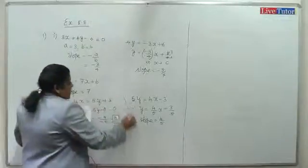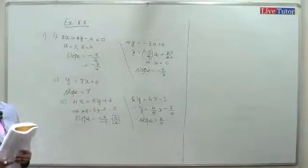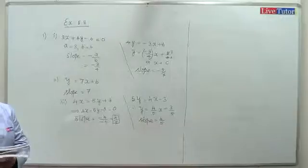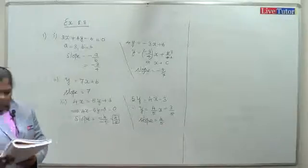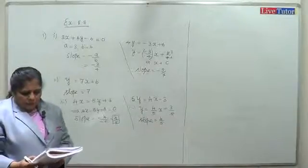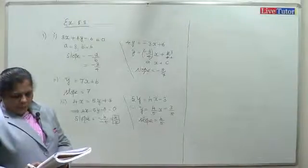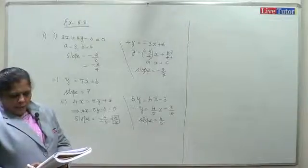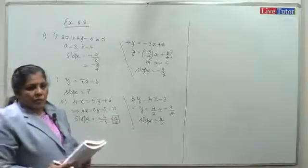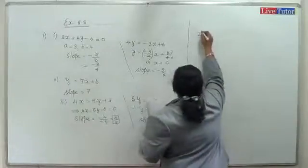Question 2: Show that the straight lines x plus 2y plus 1 equals 0 and 3x plus 6y plus 2 equals 0 are parallel.